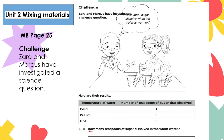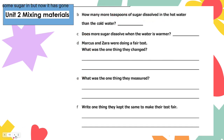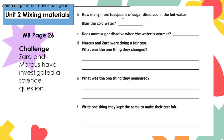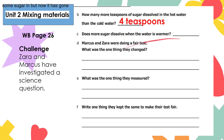Question four, letter A: how many teaspoons of sugar dissolved in the warm water? Looking at the table, the answer is three teaspoons. Letter B: how many more teaspoons of sugar dissolved in the hot water than the cold water? Five teaspoons dissolved in hot water and only one in cold water, so the answer is four more teaspoons. Letter C: does more sugar dissolve when the water is warmer? Yes, because sugar dissolves faster in hot water — hot water has more energy than cold water.